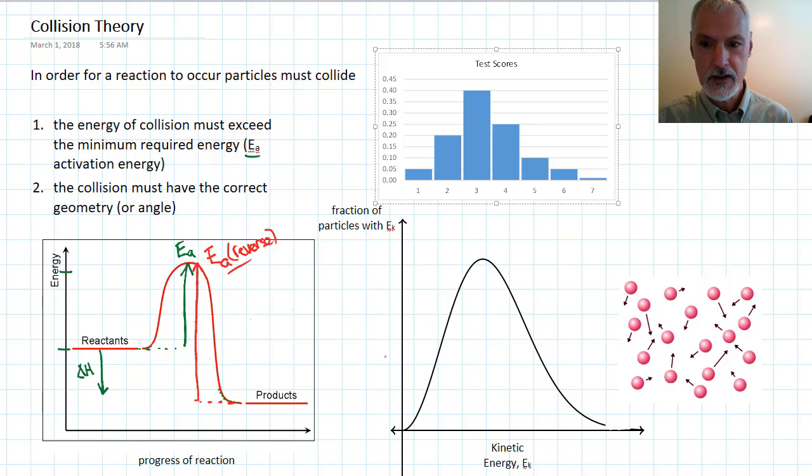The bottom axis, the score, is very similar to what we view down here in this lower graph as kinetic energy. The axis that's on this side corresponds to the fraction of the class that obtained a particular score, in much the way that we have a fraction of particles with a certain amount of kinetic energy.